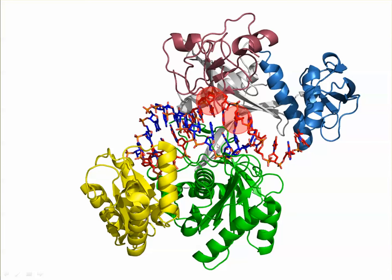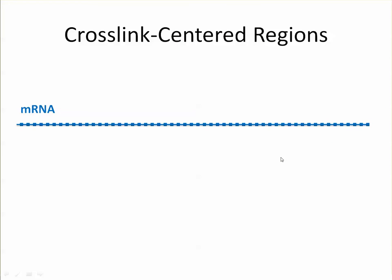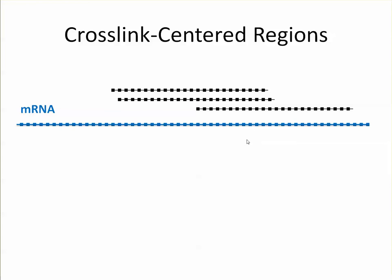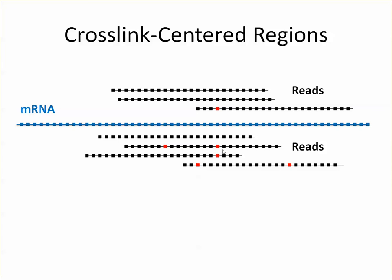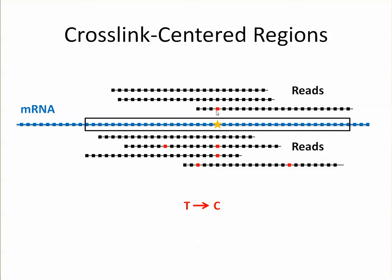Similarly, the mRNA or target RNA has a preferred location for its cross-link, and people know this. They've used this information to make what are known as cross-link centered regions. Basically, they take all the reads that map to the mRNA, look for the mutation — which is a T-to-C in this case — and the position with the most T-to-C mutations is made the center of the cluster. Then they go 20 bases in both directions, and they call this a cross-link centered region.